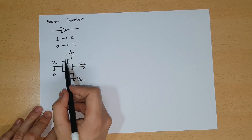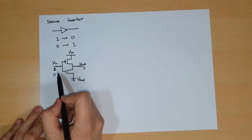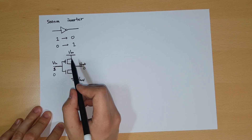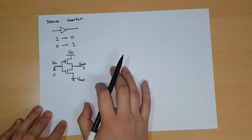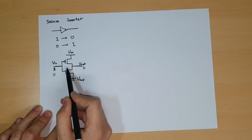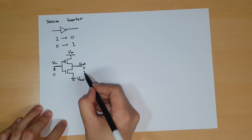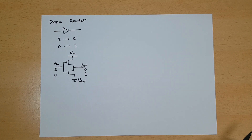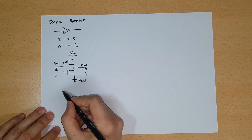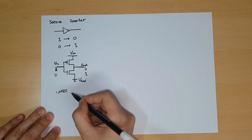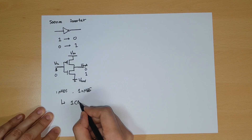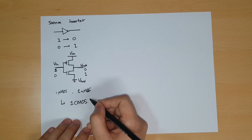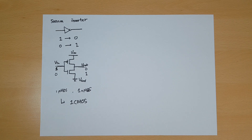If you input voltage zero, since this is a PMOS it will be opened — you have to design it that way by controlling the doping concentration in the device. Since there is a zero, the NMOS will be closed and the PMOS is open, so the VDD signal comes through and we get one. This contains one PMOS and one NMOS — basically one complementary metal-oxide-silicon field-effect transistor. So what we're going to make is one CMOS.